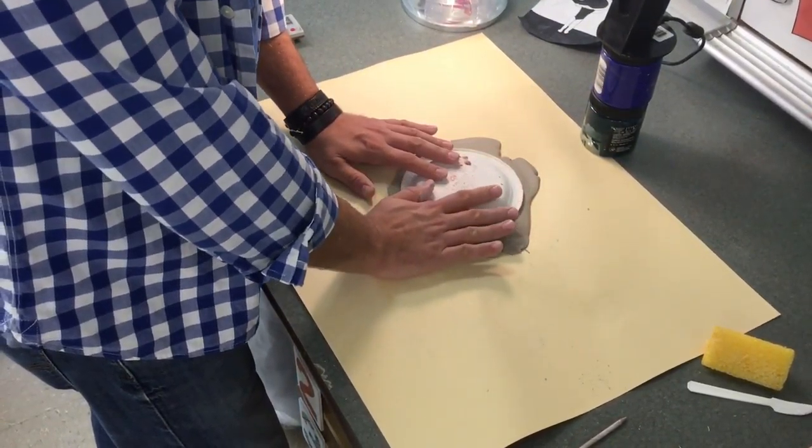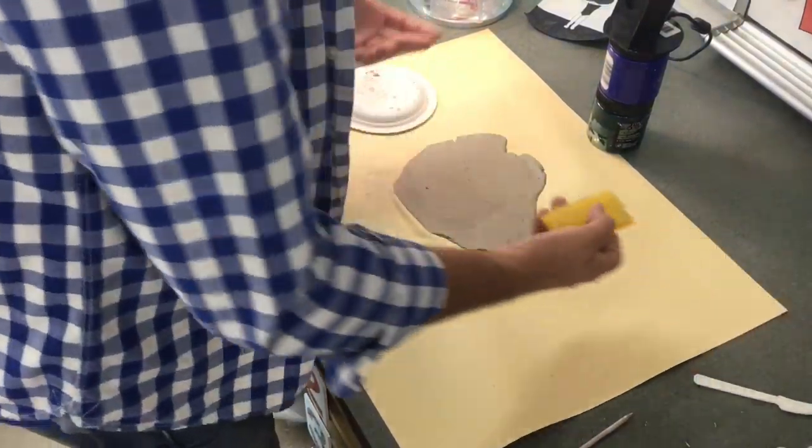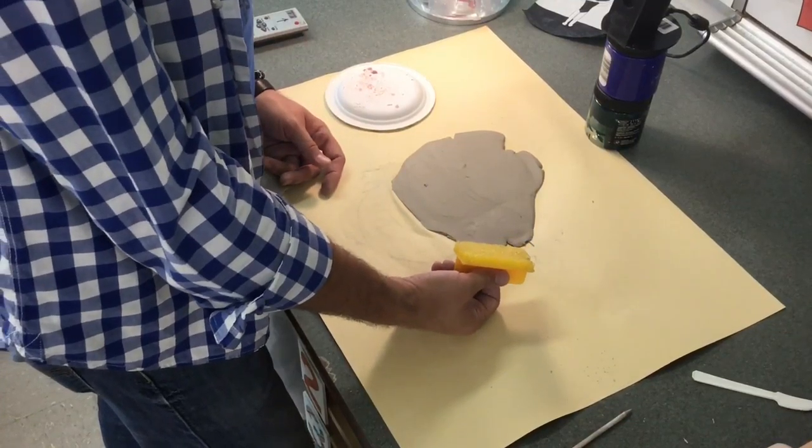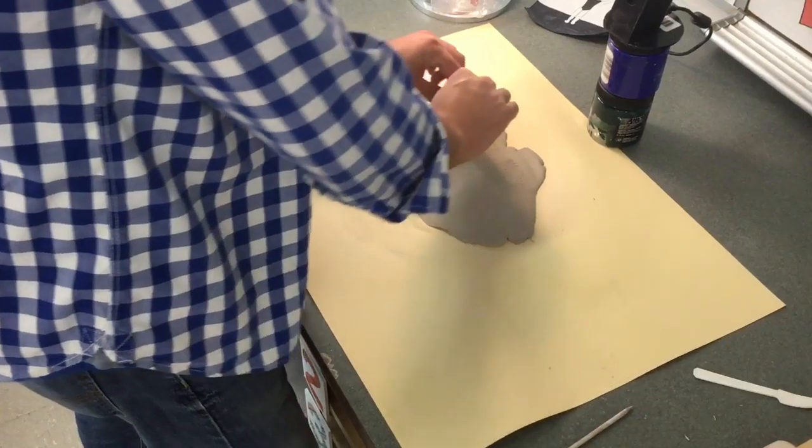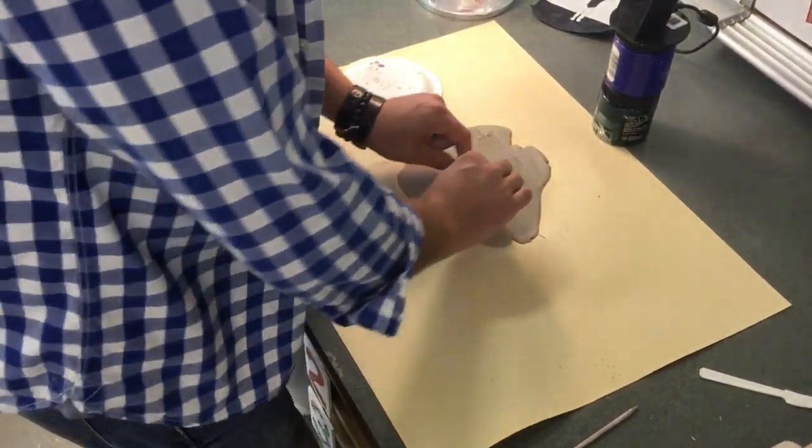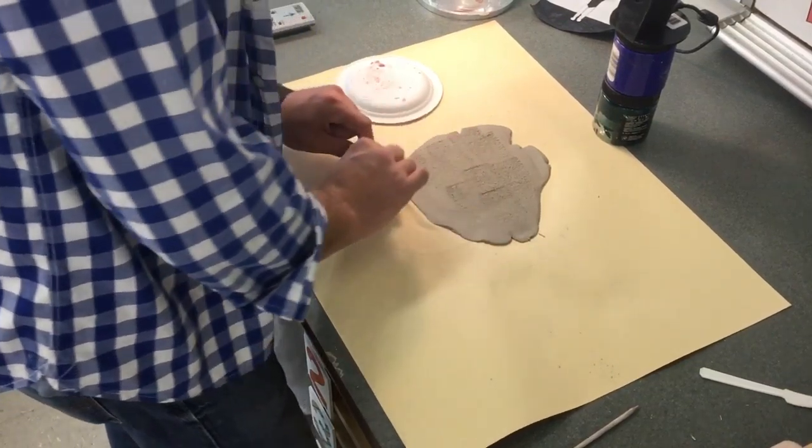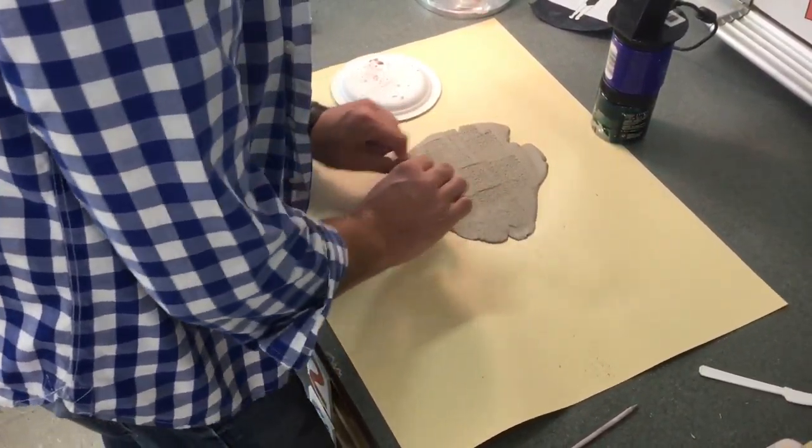But before I cut out my circle, I need to add my texture. So I'm going to grab a texture pad from the cup and I'm going to press a texture into my clay. Look at all that great, amazing texture. This is going to be a beautiful moon to go behind our clay owls.